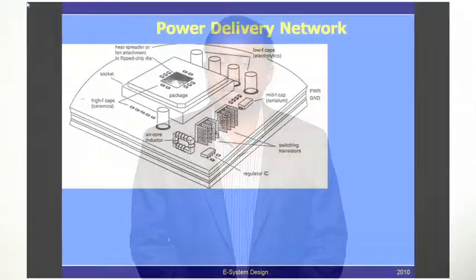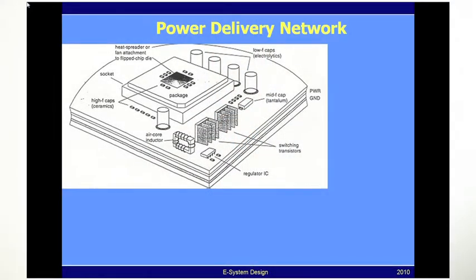The power distribution network consists of three parts: the power distribution network in the die, the power distribution network in the package, and the power distribution network in the printed circuit board. When you join all of them together, what results is a power delivery network.